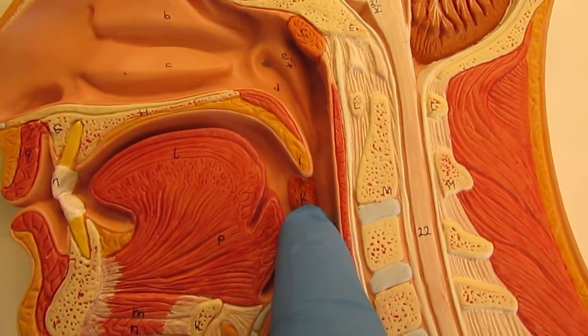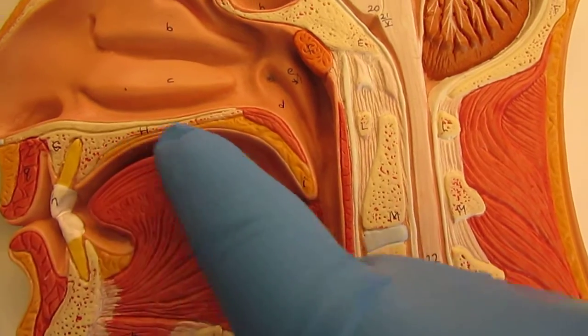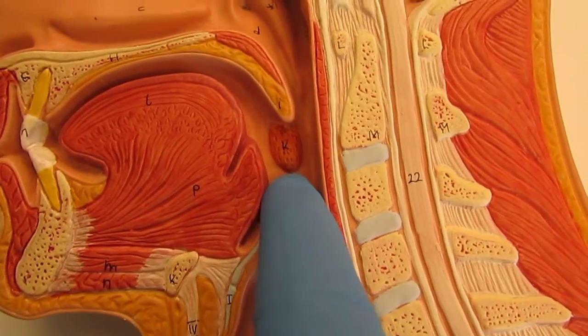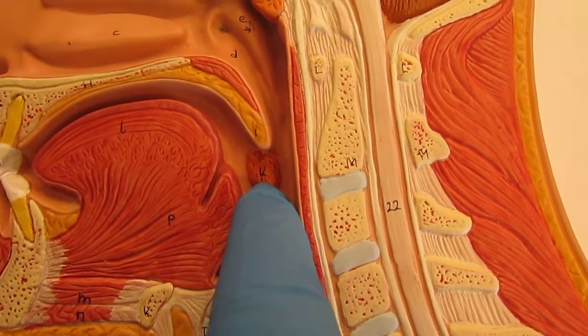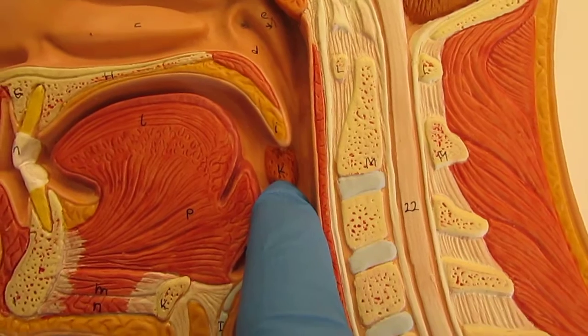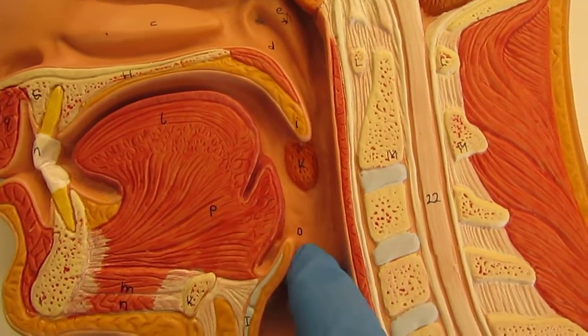Next we have the palatine tonsil, which again, you take food, air, drink through your oral cavity and ultimately down through your pharynx and esophagus. This palatine tonsil is going to make sure that nothing funny or suspicious gets down into the rest of your body as well.